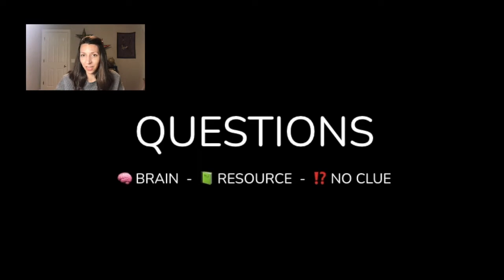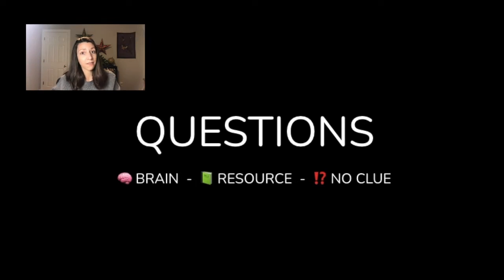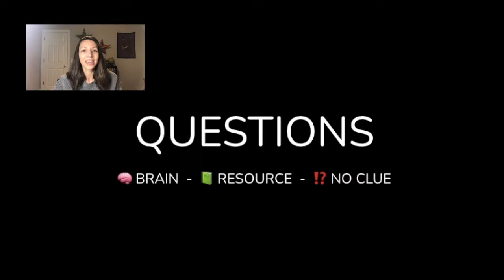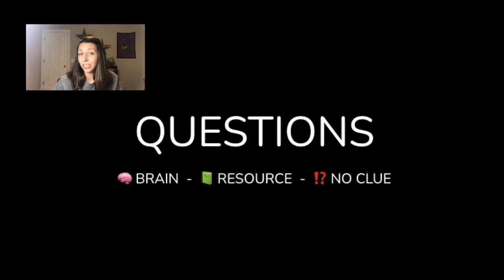Coming up on our last section of our study video, we're going to go through some questions. I want you to make sure that you're thinking about where you get these answers from. If they come from your brain and you get them right, that's information you know well and probably don't need to review too much more. If you have to use a resource to look them up, mark that as something to go back and study later. And if you have absolutely no clue, that's something you really need to go back and study. So mark each of these questions with either brain, resource, or no clue.